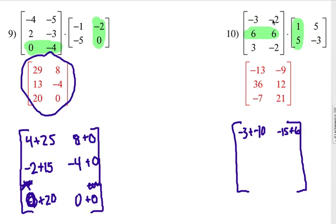Here we have 6 plus 30. Yep, 36, right there. Then we have 6 times 5 is 30. And 6 times negative 3 is negative 18. 30 minus 18. Yep, positive 12 goes right there.